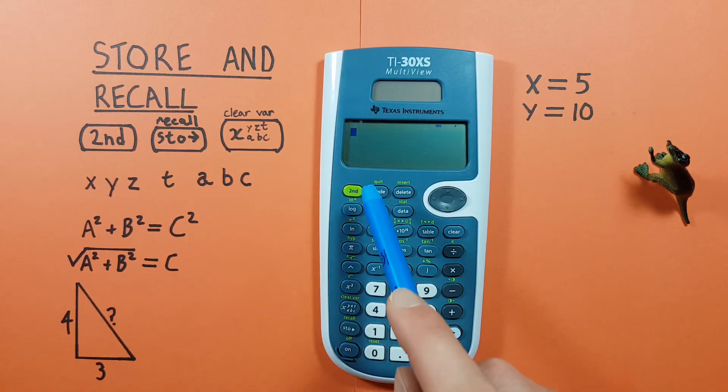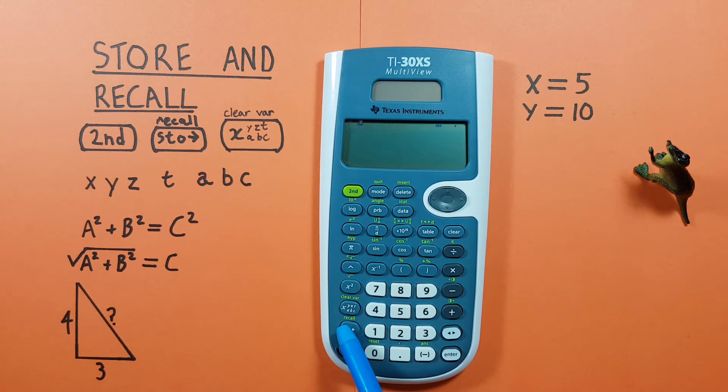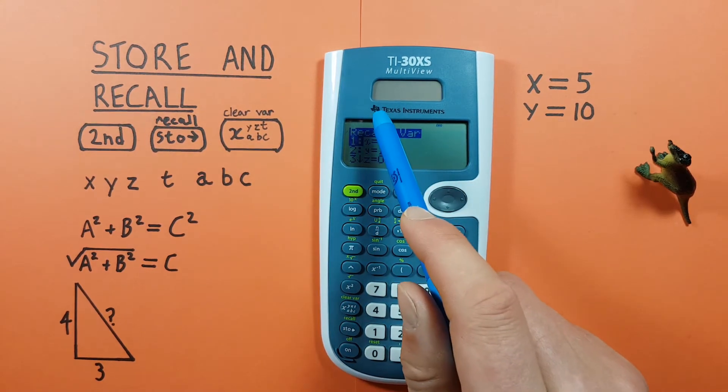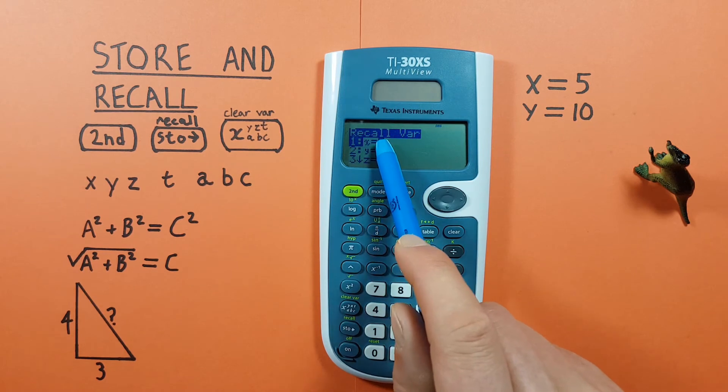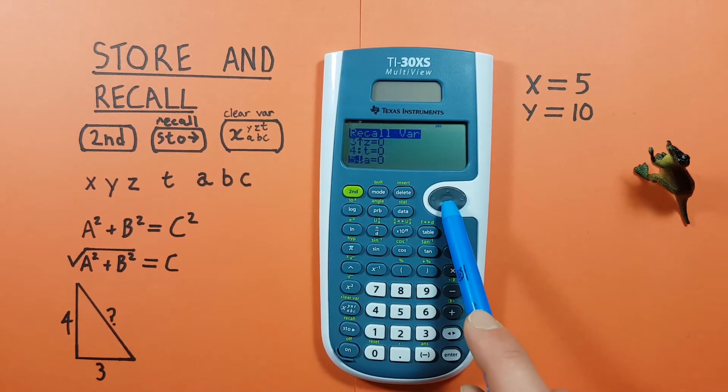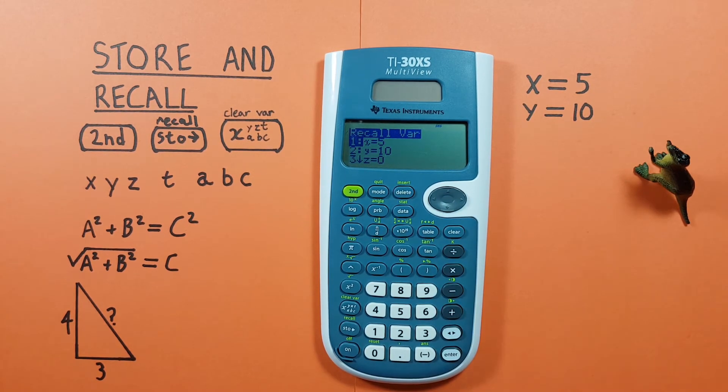You can view your memory slots by hitting the second store key which is the recall function, and that brings you to this menu here. Here we see X is equal to 5, Y is equal to 10, and the rest have 0 in them because we haven't saved anything in there.